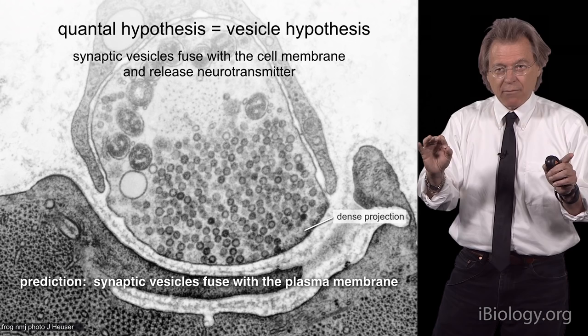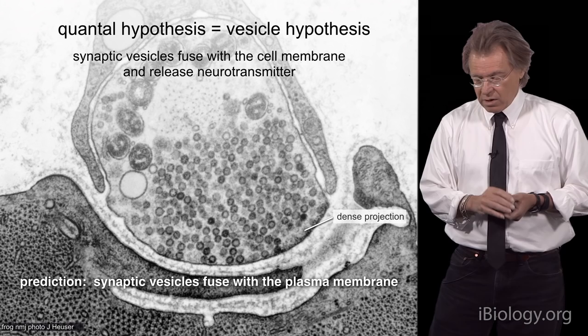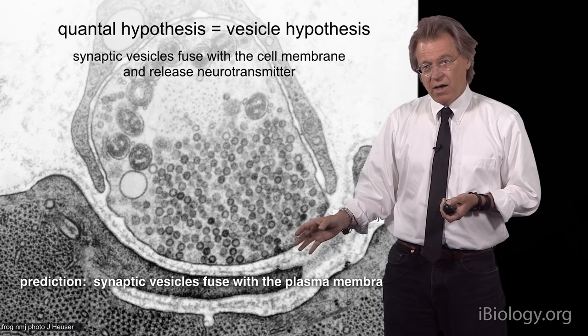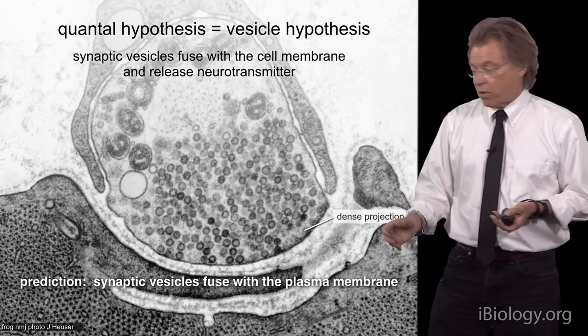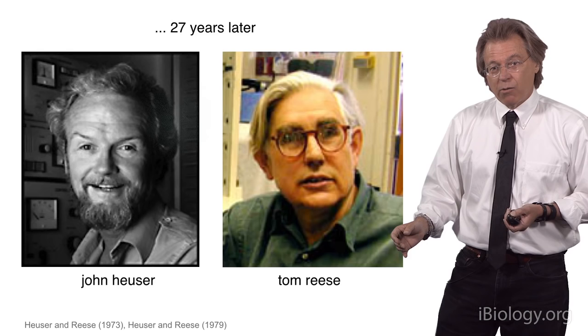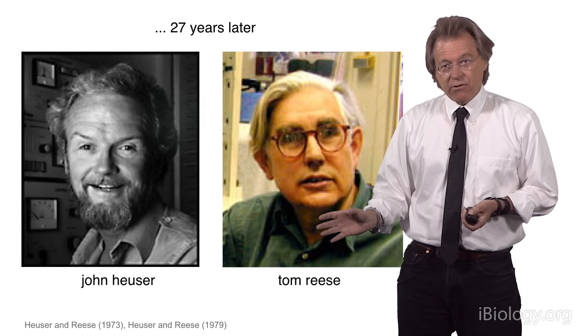Katz took on a grad student — his name was John Heuser — and John's job was to try to capture these fusion events. He was never able to do so, and in fact John never got his PhD working with Katz. But he was obsessed with this problem and wanted to pursue it.